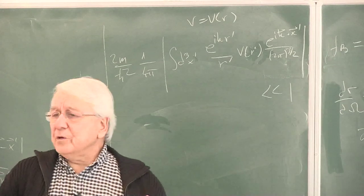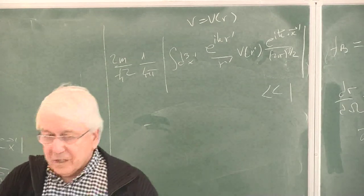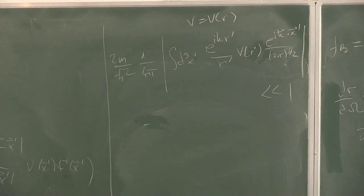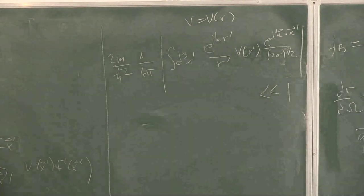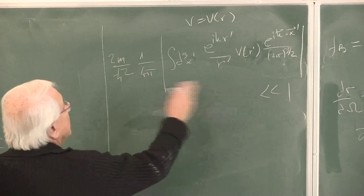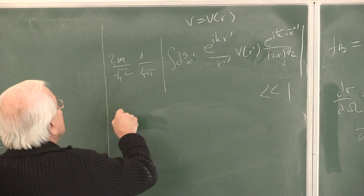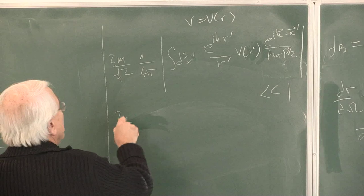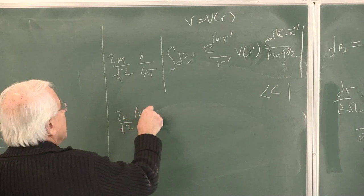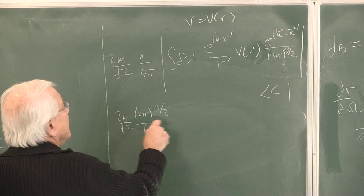This must be very small compared to 1, meaning it gets very close to 0. So this is the condition. If I take them out, (2m over h-bar squared) times (2pi to the minus 3-halves) divided by 4pi — now take the dummy integration variable and carry out the phi integration only, because nothing depends on phi.